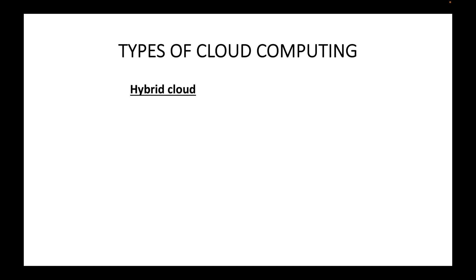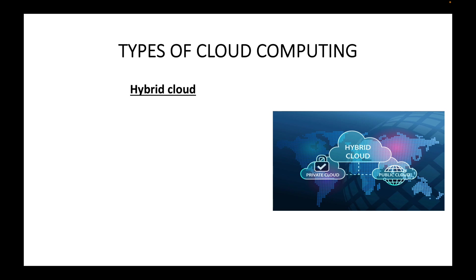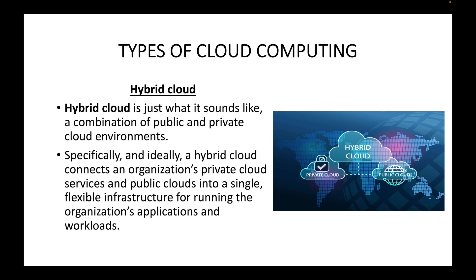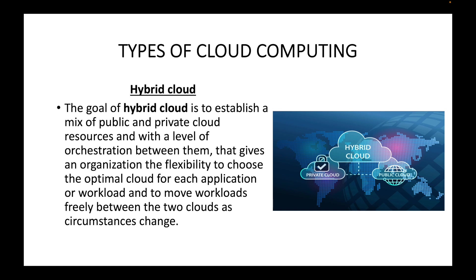The next deployment model is the hybrid cloud. It is simply a combination of your public cloud and private cloud, so some resources will be public and some will be private. Specifically, a hybrid cloud connects an organization's private cloud services and the public cloud into a single flexible infrastructure for running applications and workloads. The goal is to establish a mix of public and private cloud resources with a level of orchestration that gives the organization flexibility to choose the optimal cloud for each application and to move workloads freely between the two clouds as circumstances change.